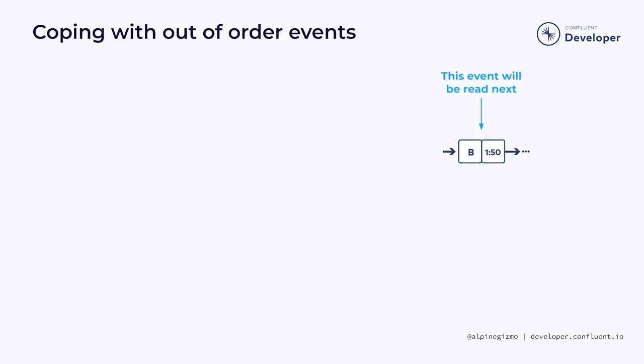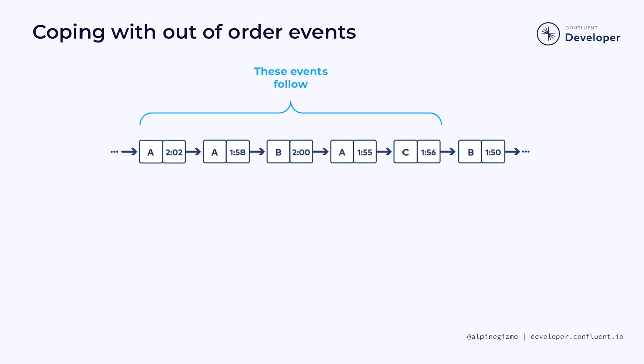Here you see part of an event stream. This event will be processed next. These events are following the event at 1:50. If you look closely, you'll see that these events are somewhat out of order. For example, there's an event at 1:55 that will be processed after the event at 1:56. Processing out-of-order event streams like this one can be challenging.